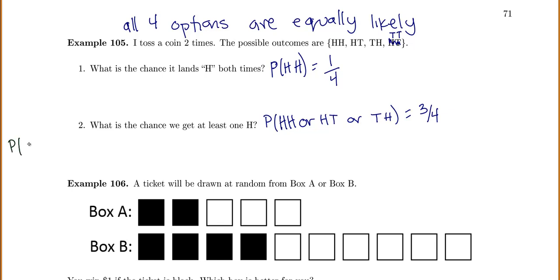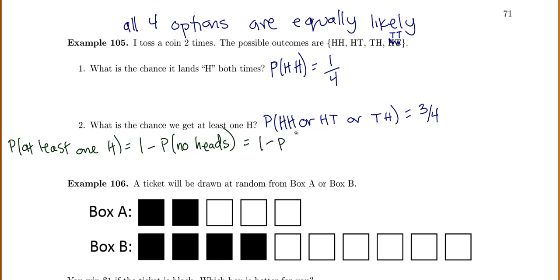I could also use the complement rule to make it easier. The probability of at least one head is the opposite of no heads, so it's one minus the probability of no heads. The only way to get no heads is TT, which has probability one fourth. So one minus one fourth gives three fourths — the same answer either way.